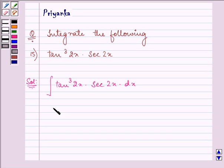Now we can write tan cube 2x as tan square 2x into tan 2x, right? We get multiplied by secant 2x into dx.